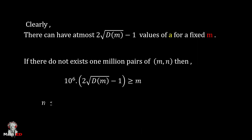So m must be less than or equal to 10⁶ × (2√D(m) - 1). After using the inequality we have proven previously, we should get this is less than 10⁶ × (2√(r·m·log m) - 1).